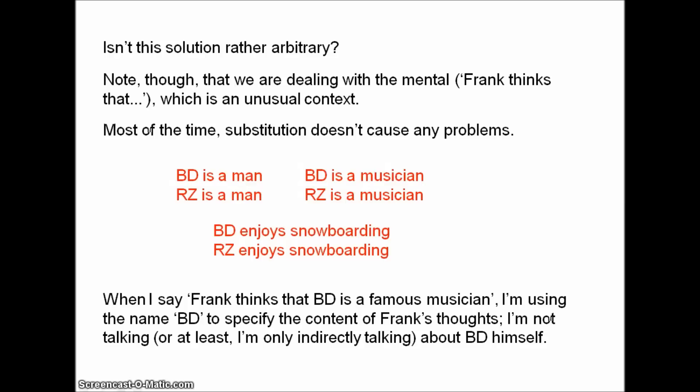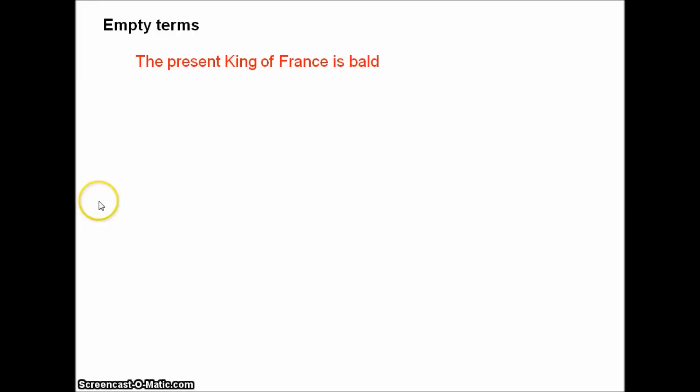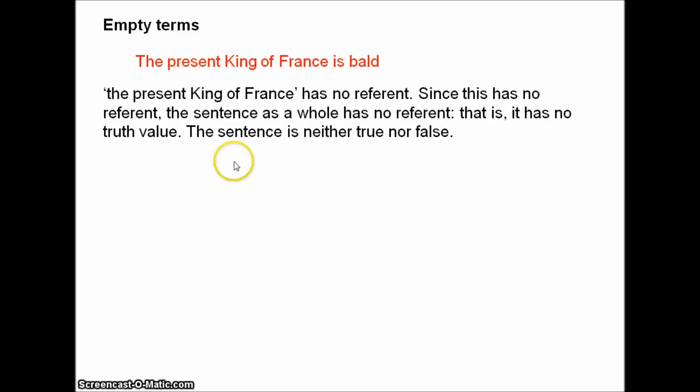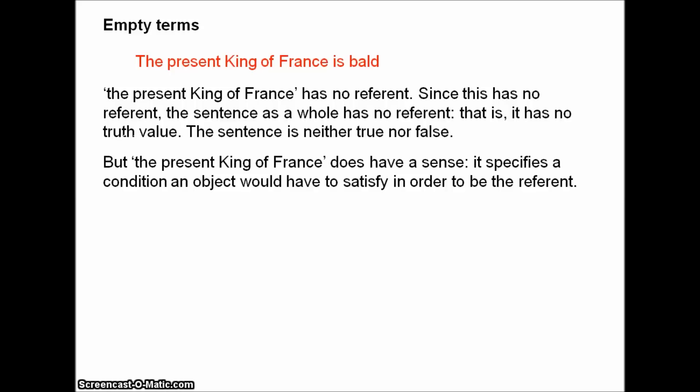How about empty terms? 'The present king of France is bald' — well, the present king of France doesn't refer to a real thing, so it has no referent. And since referent is what determines truth value, if the name has no referent, then the sentence as a whole has no referent — that is, it has no truth value. The sentence is neither true nor false. This is an obvious consequence of Frege's view: since there is no object referred to by 'the present king of France,' there's no fact of the matter whether it's bald or not. But the present king of France does have a sense — it specifies a condition an object would have to satisfy in order to be the referent, namely the object would have to be presently king of France. So equally the sentence has a sense, it expresses a thought, and this explains how our sentence can be meaningful.